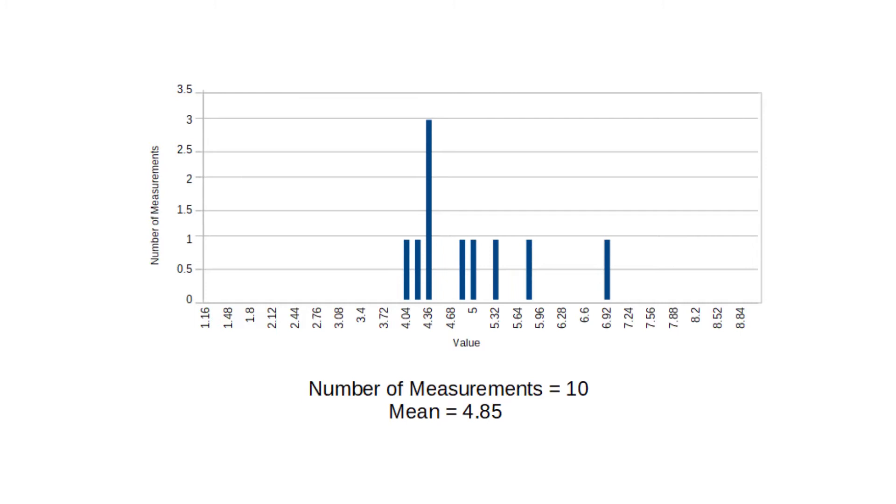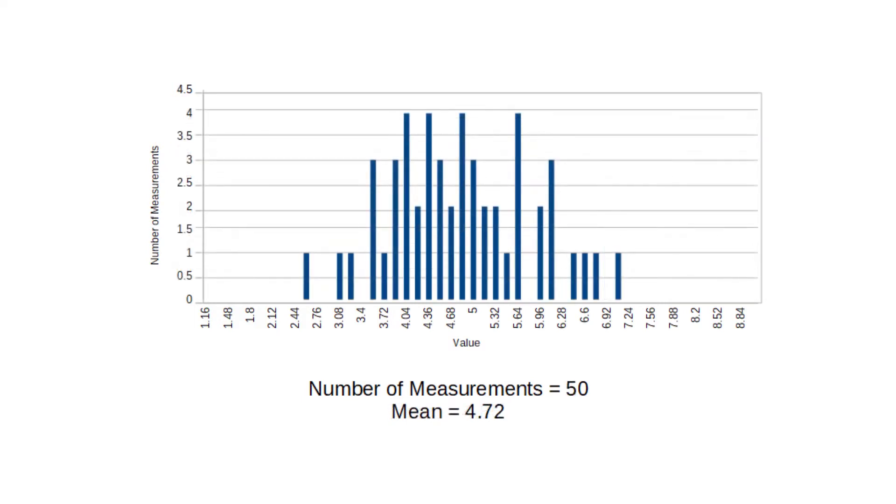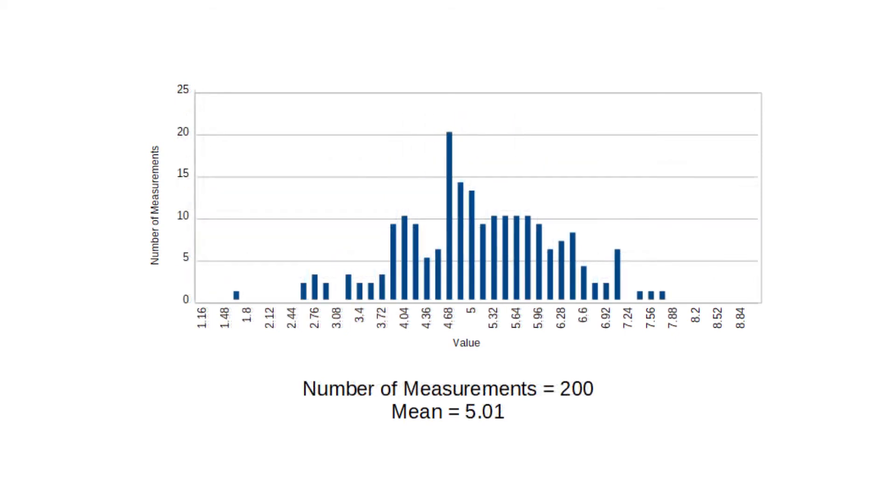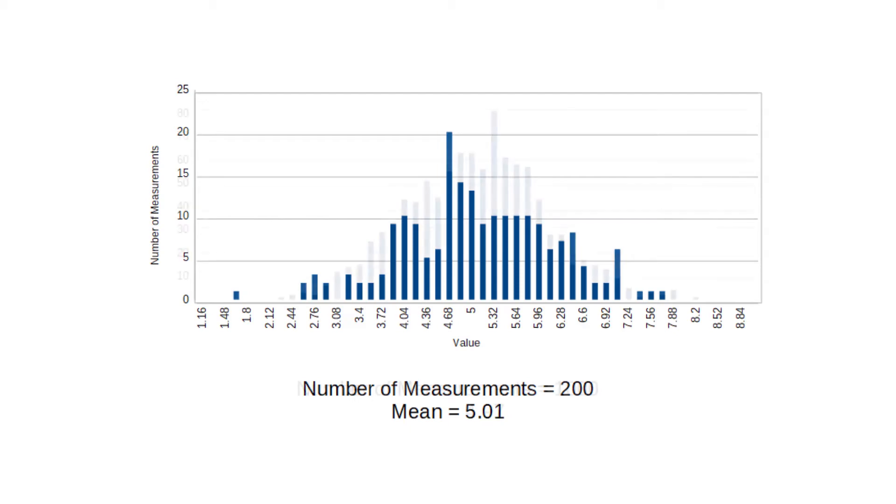As we take additional measurements, the mean value can move around, and although it moves around less the more measurements we take, we can never arrive at the true value. We can also start to fill in this bell curve, but we'll never end up with a completely smooth Gaussian distribution.